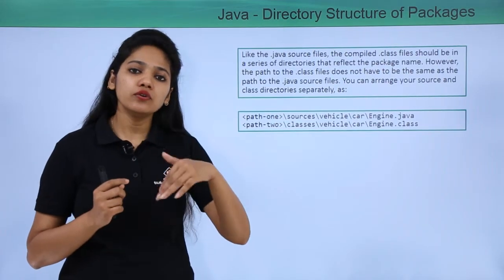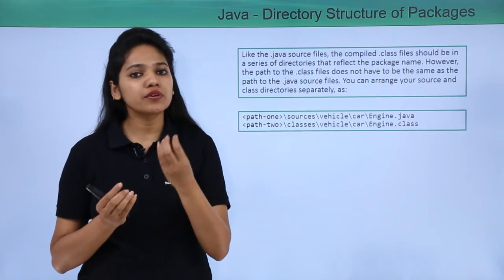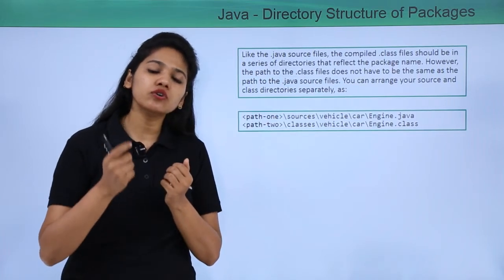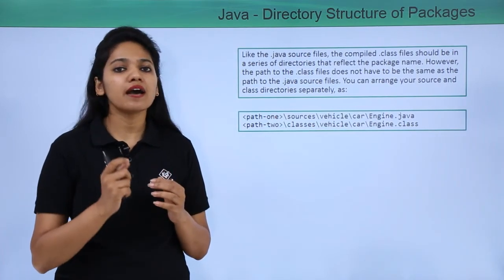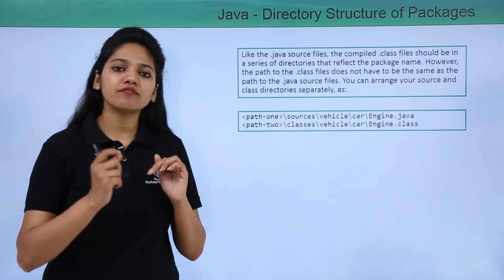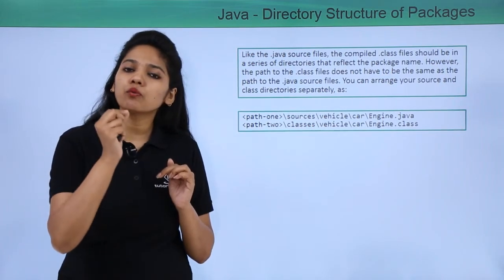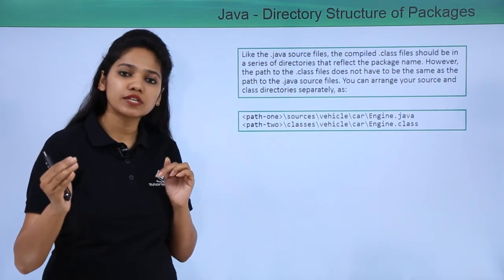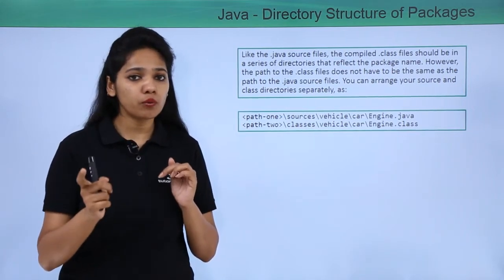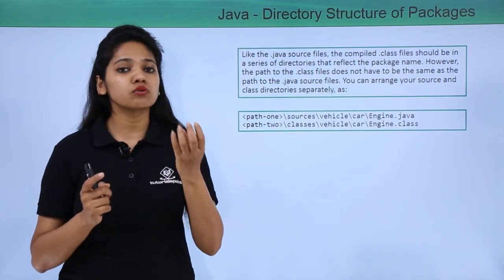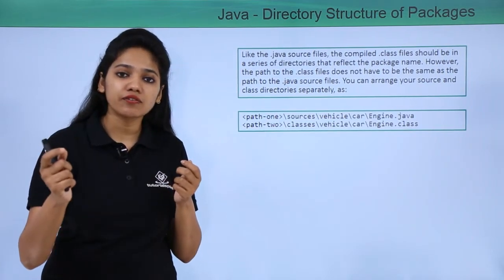When you create a Java program and execute it, what files does it create? You create a .java file and when you compile, it creates a .class file. The main purpose: if you want to provide the .class file to an outside user — telling them what the class does — but you don't want to provide the source code, the source code is stored in your .java file. So you provide the .class file but not the .java file.